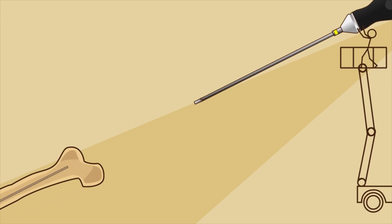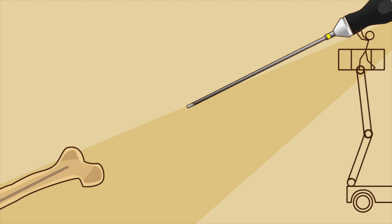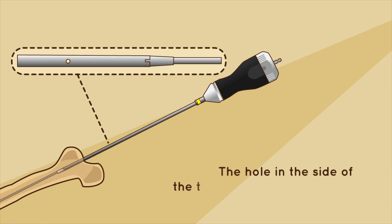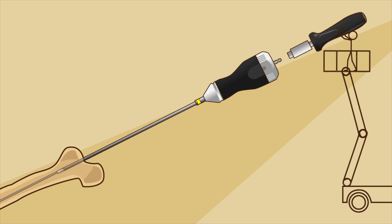Step 2. Under fluoroscopy, locate the end of the male component and mount the male retriever onto it. Make sure that the end of the male component is fully inserted into the male retriever before tightening. The hole in the side of the tube should not be visible. Mount the torque handle.